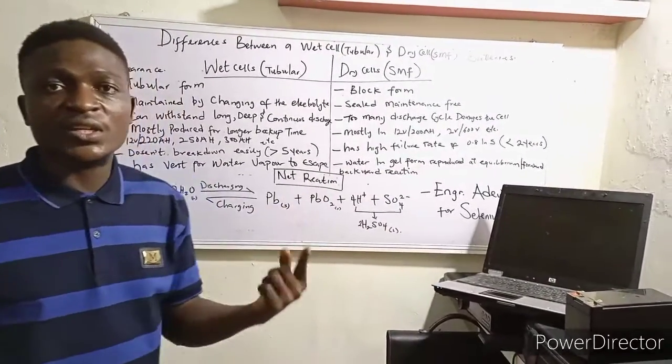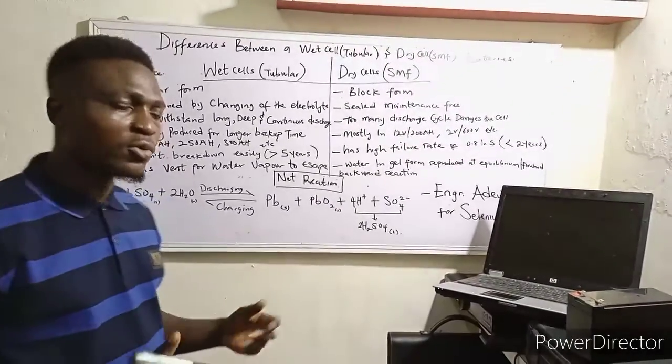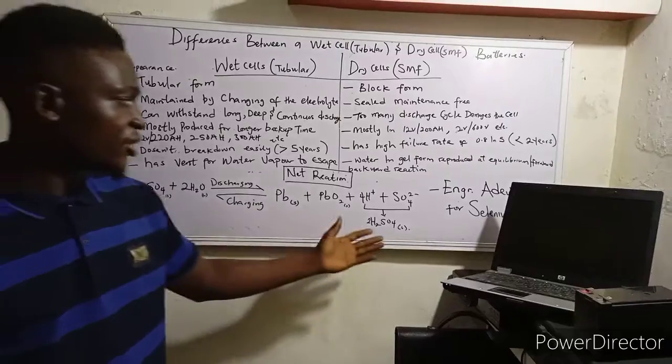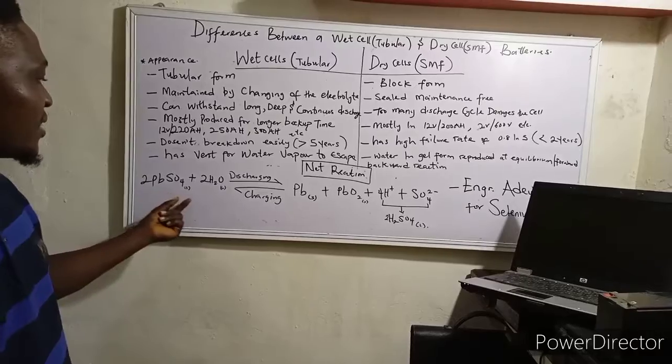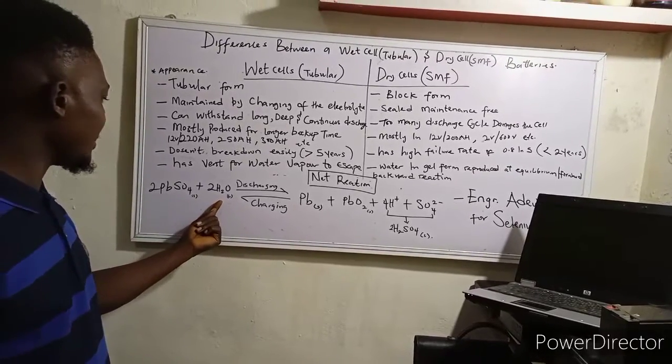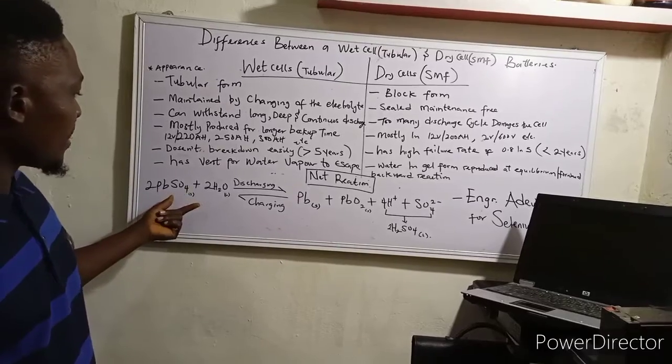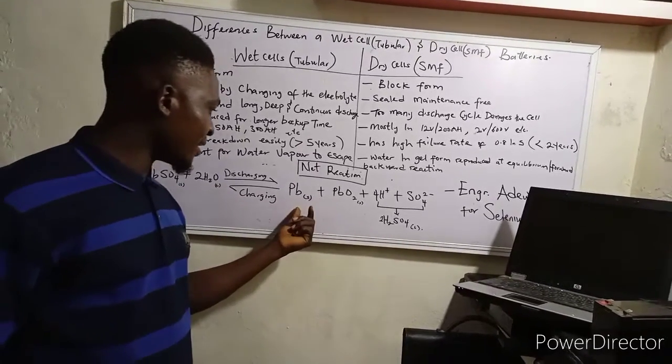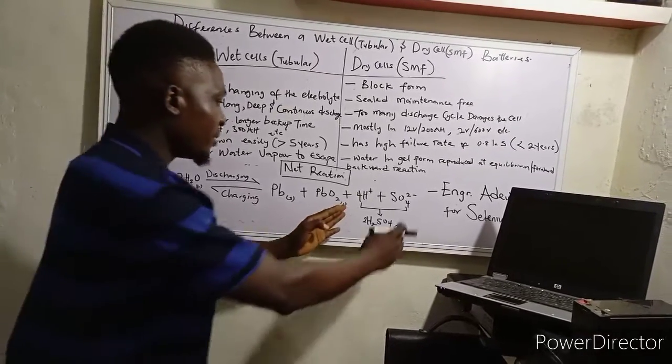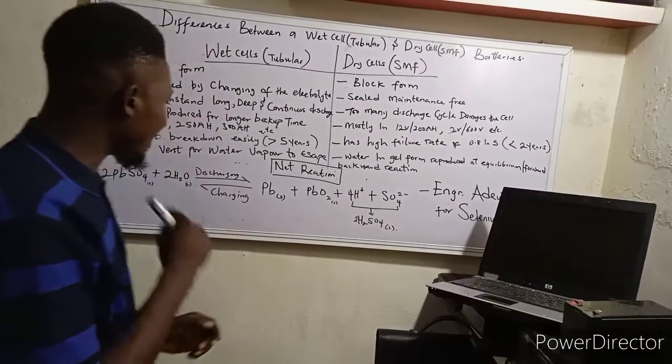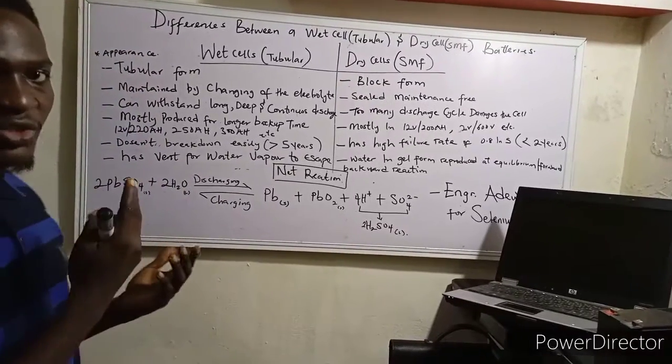So what do they now have in common? They both have this reaction in common: the charging and discharging. In the discharging phase, you have the lead sulfate reacting with water, distilled water. The lead sulfate forms this acid bar. So charging of the battery is the inverse of discharging of the battery, and this is the overall reaction.